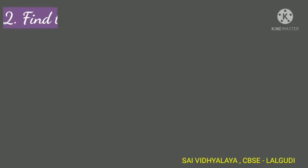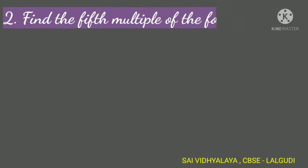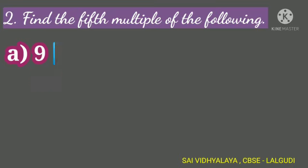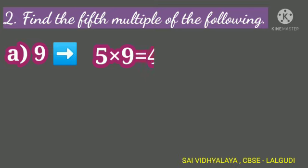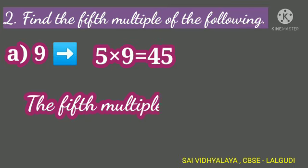Find the fifth multiple of the following. First, number 9. Here we have to find the fifth multiple. So, multiply number 9 by 5. 5 nines are 45. So, the fifth multiple of number 9 is 45.